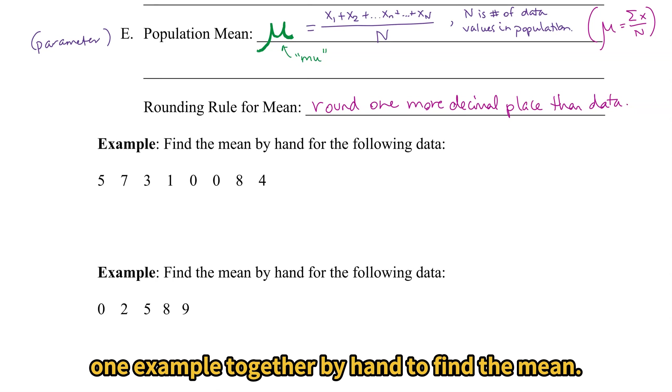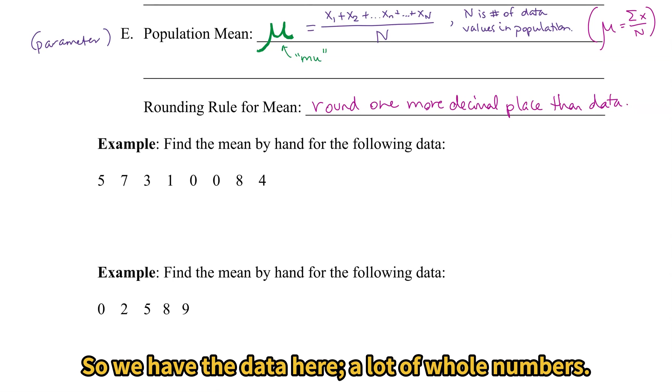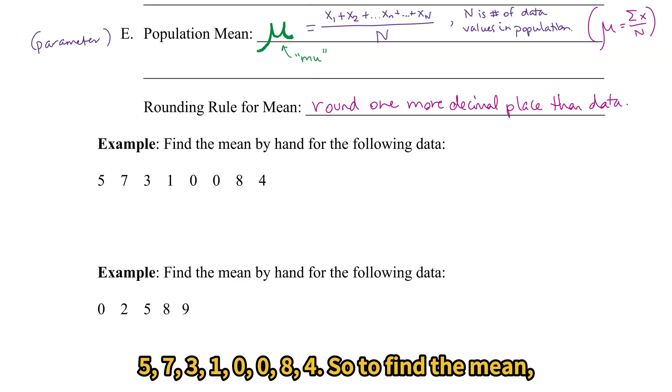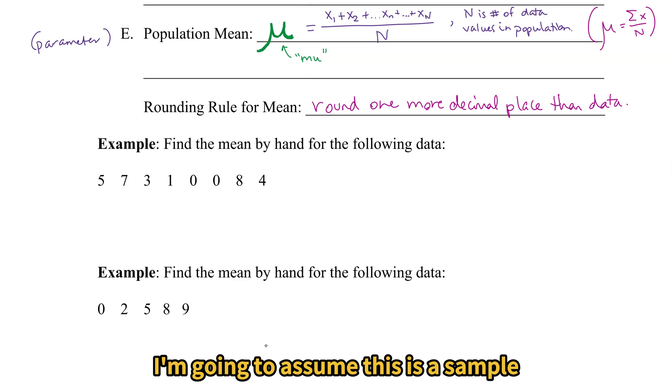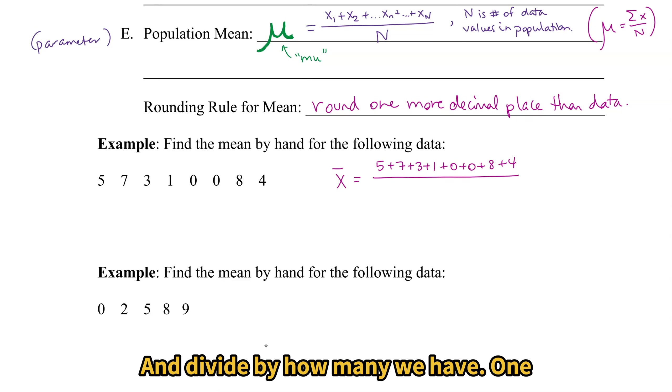Which will be pretty much our standard rounding rule for most of the statistics that we'll encounter. Let's do one example together by hand to find the mean. So we have the data here, a lot of whole numbers, 5, 7, 3, 1, 0, 0, 8, 4. So to find the mean, I'm going to assume this is a sample since it is a small grouping of numbers. It ultimately doesn't matter because my formulas are the same. Whether it's a population or a sample will be more important later on.